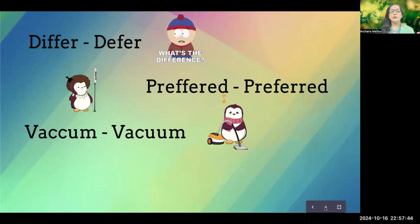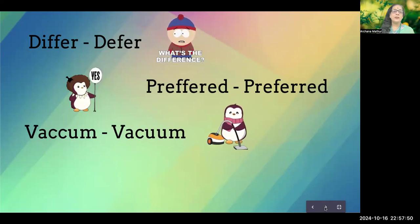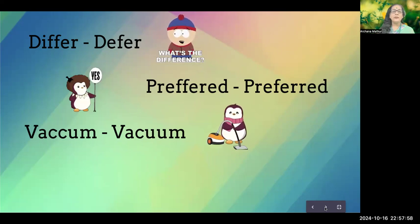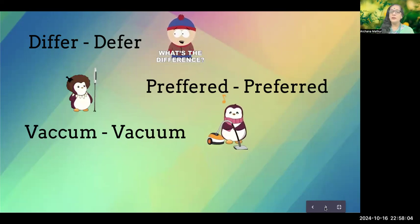Another word people often misspell is vacuum. The incorrect version drops a U, but the correct spelling uses double U — v-a-c-u-u-m. If pronounced incorrectly it becomes 'vac-um,' but the correct pronunciation is 'vacuum.' We use vacuum cleaners.